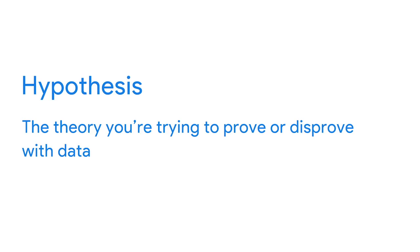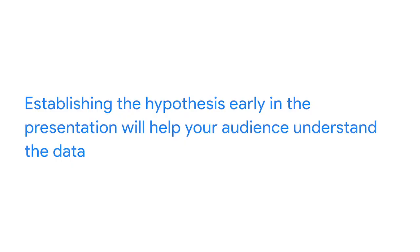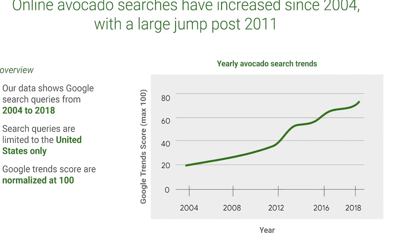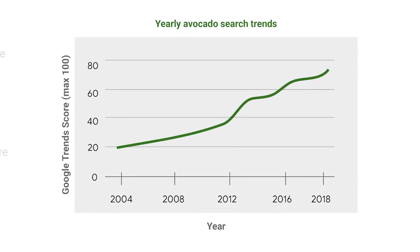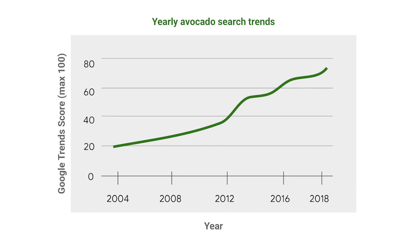Next, you'll want to establish the initial hypothesis — the theory you're trying to prove or disprove with data. In this example, our business task was to compile average monthly prices. Our hypothesis is that this will show clear trends that can help the grocery store chain plan for avocado demand in the coming year. You'll want to establish your hypothesis early in the presentation so that when you present your data, your audience has the right context to put it in. Next, you'll want to explain the solution to your business task using examples and visualizations. A good example is the graph we used that clearly visualized the search trend score for the word avocado from year to year. Raw data can take time to sink in, but a good example or visualization can make it much easier for your audience to understand you during a presentation.